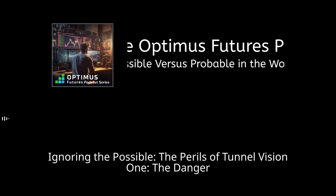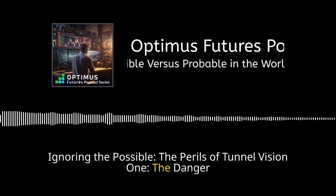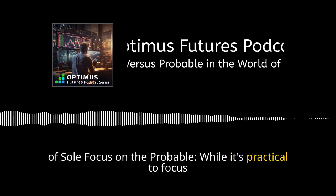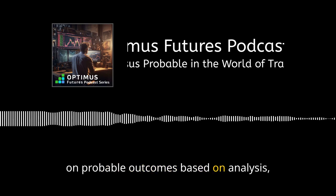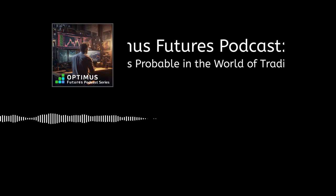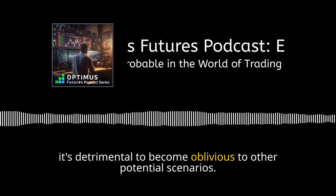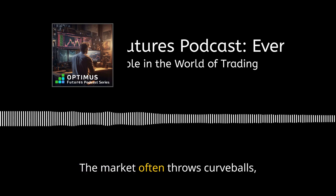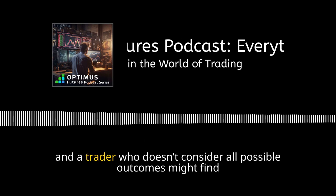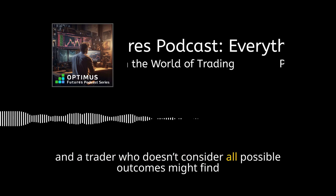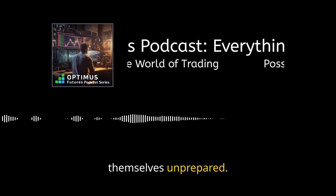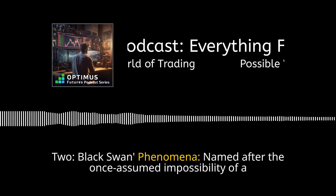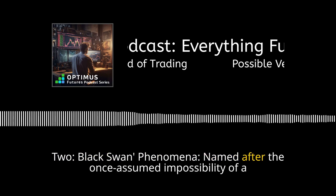Another peril is tunnel vision — the danger of sole focus on the probable. While it's practical to focus on probable outcomes based on analysis, it's detrimental to become oblivious to other potential scenarios. The market often throws curveballs, and a trader who doesn't consider all possible outcomes might find themselves unprepared.